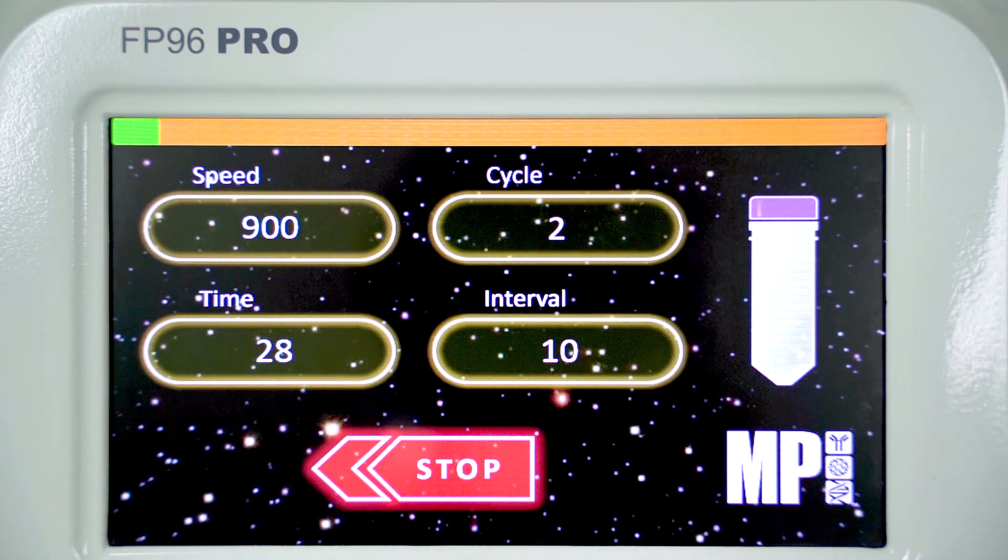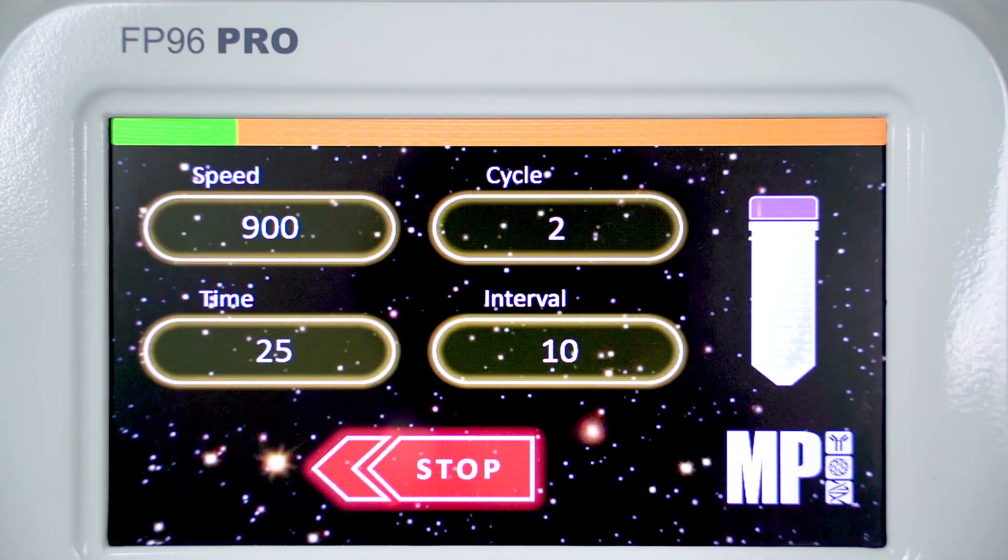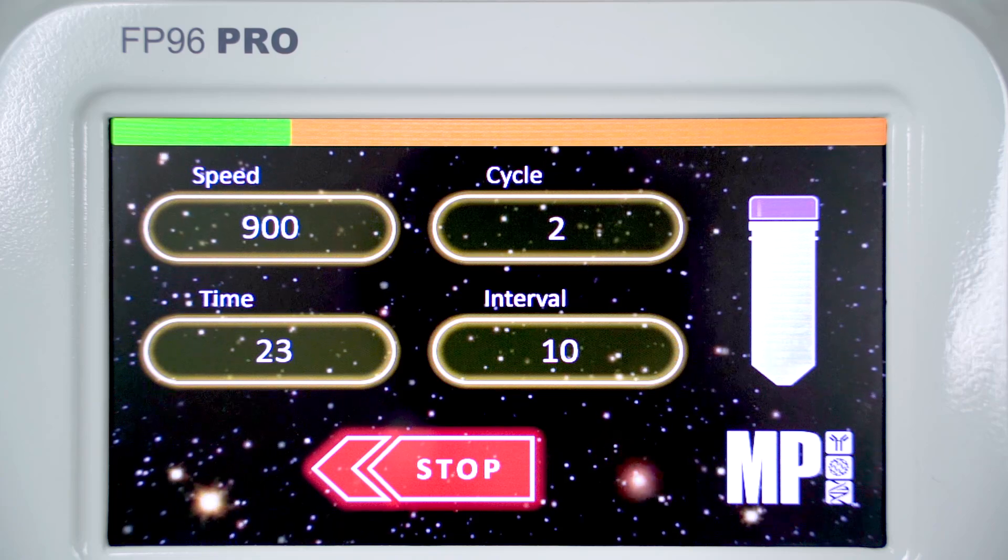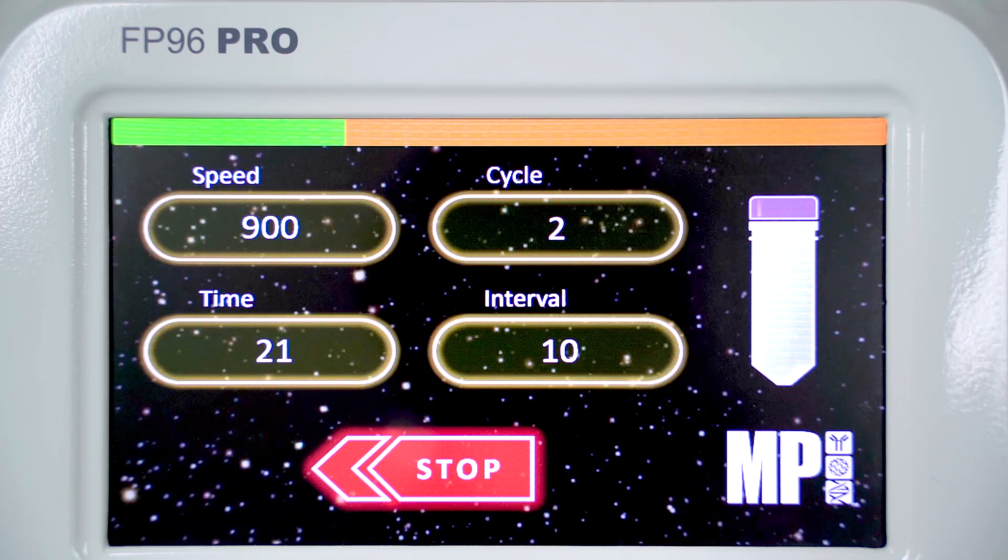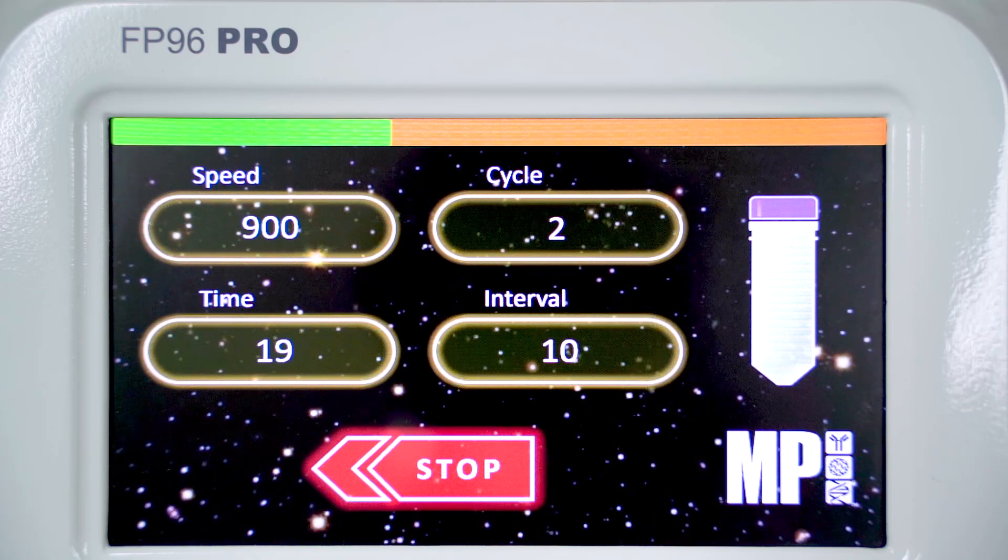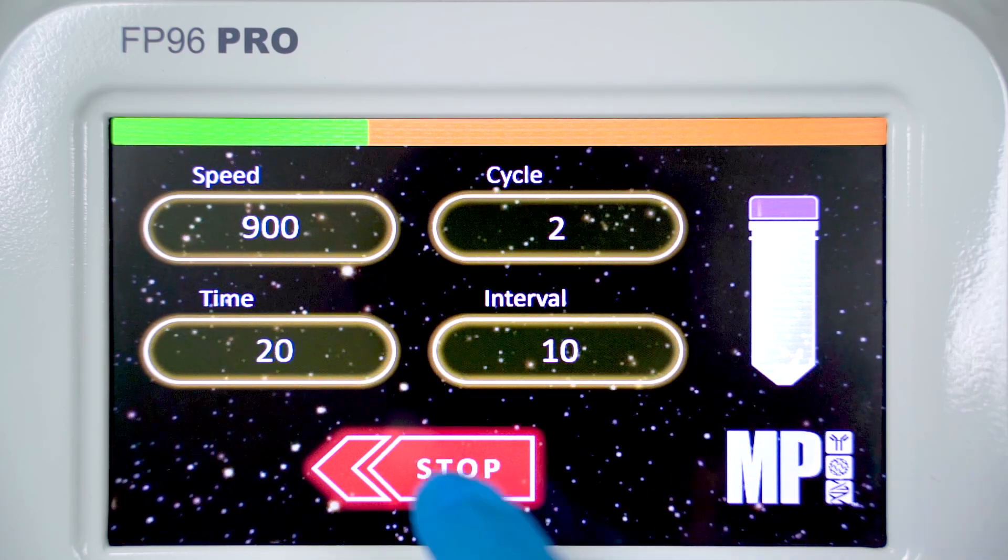The run screen will appear immediately, showing all parameters in real time so you can easily keep track of the run status. If you need to reset the parameters or stop the run, just press the stop button and everything will halt immediately.